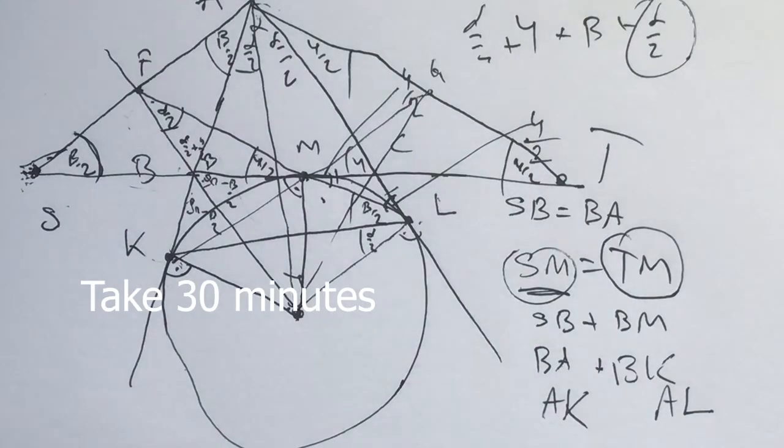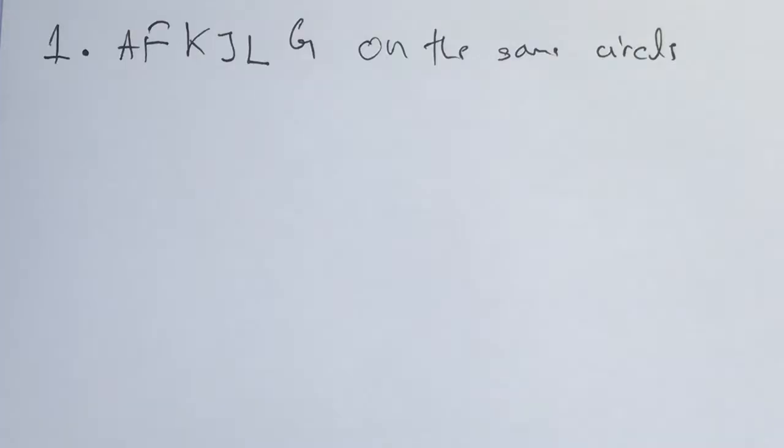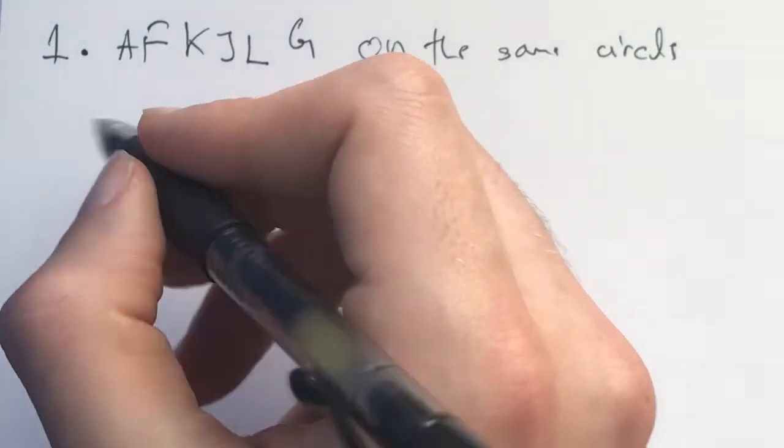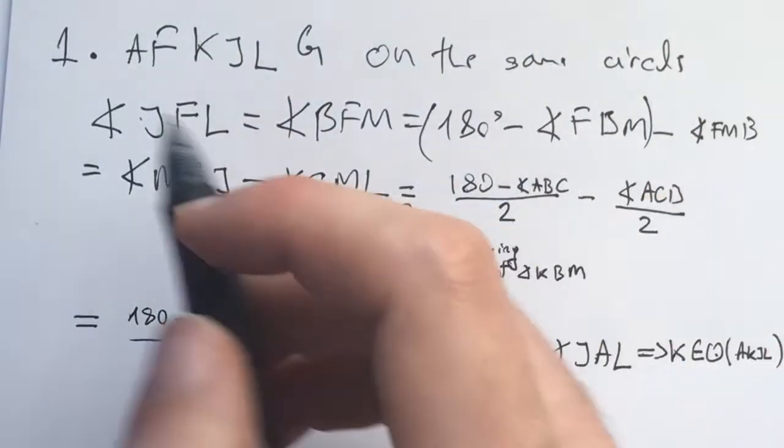So now I invite you actually to take about 30 minutes and write up a solution. Here's how I would write up the solution. So the first thing I would do is I would make this claim, and now I would prove it like, I would do it like this.